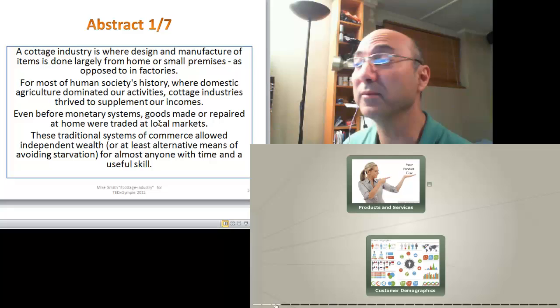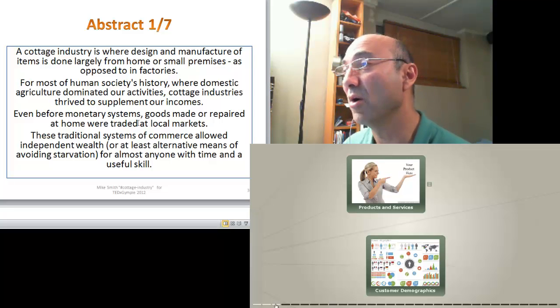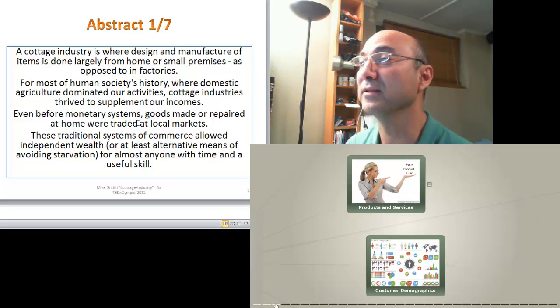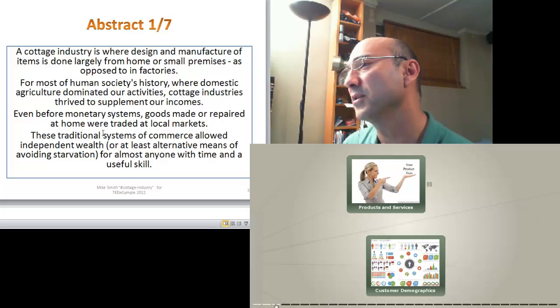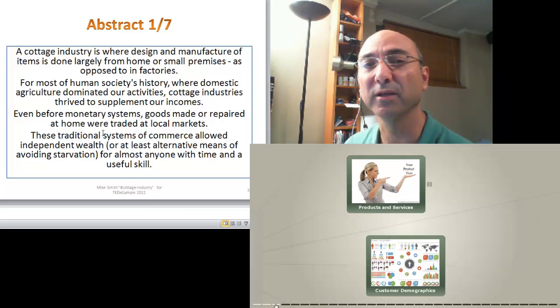And even before we had money, the barter system operated at the local markets, at the local level. So the idea of cottage industry and being able to produce something at home or do something at home or repair something at home, well, that was a traditional system of commerce. And it gave people some independence or some alternative to primary employment.